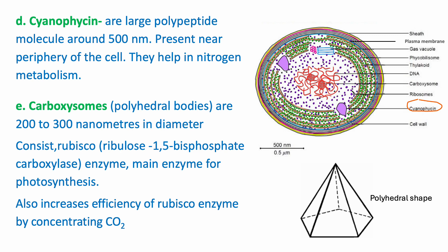Cyanophysin: these are large polypeptide molecules of around 500 nanometers, present near the periphery of the cell. They help in nitrogen metabolism. Carboxysomes: carboxysomes are polyhedral bodies of around 200 to 300 nanometers in size.